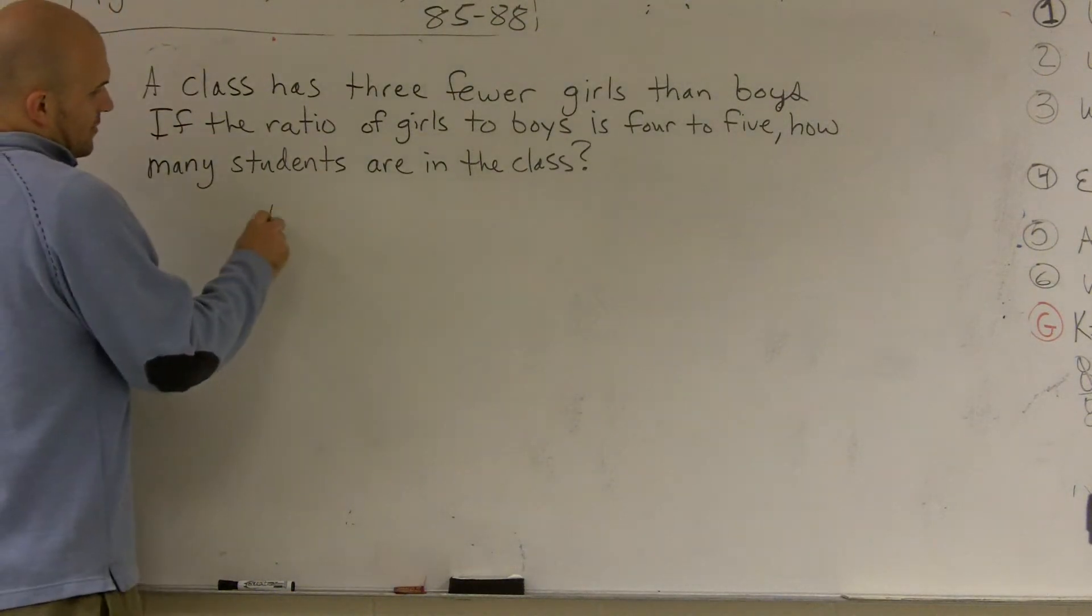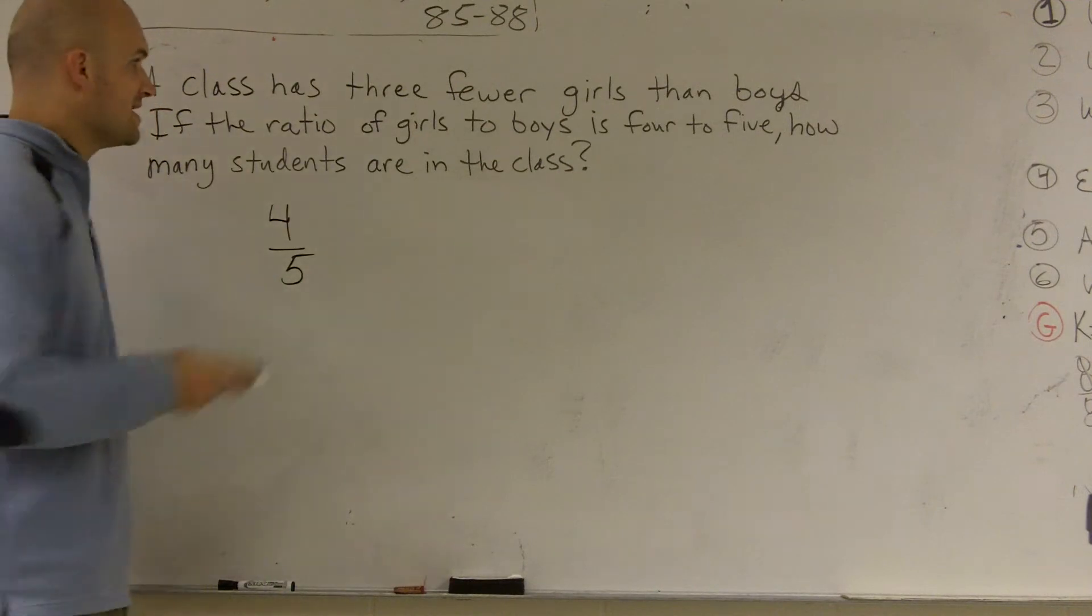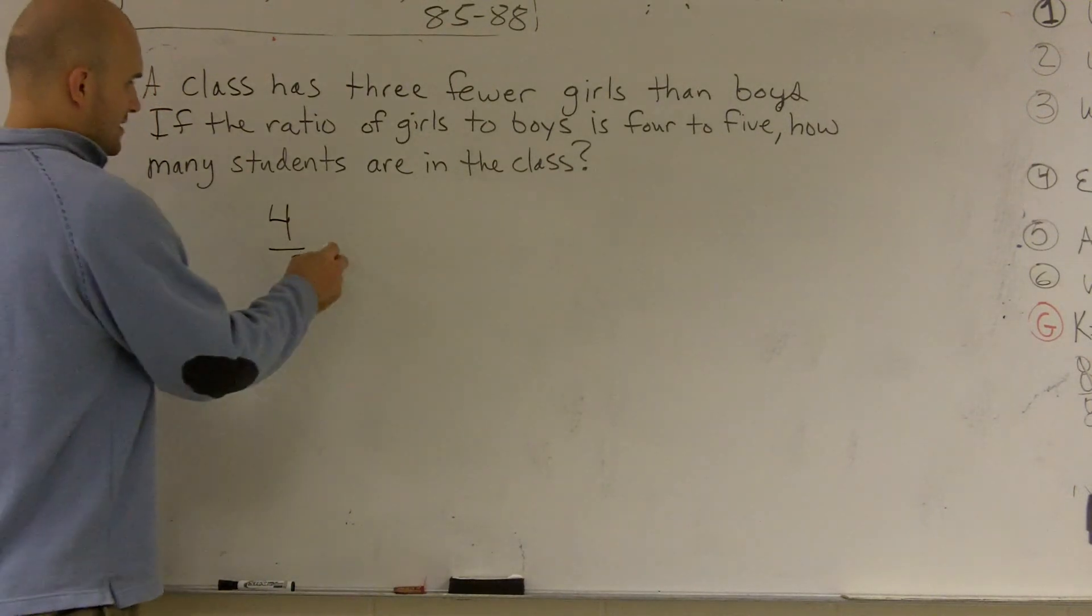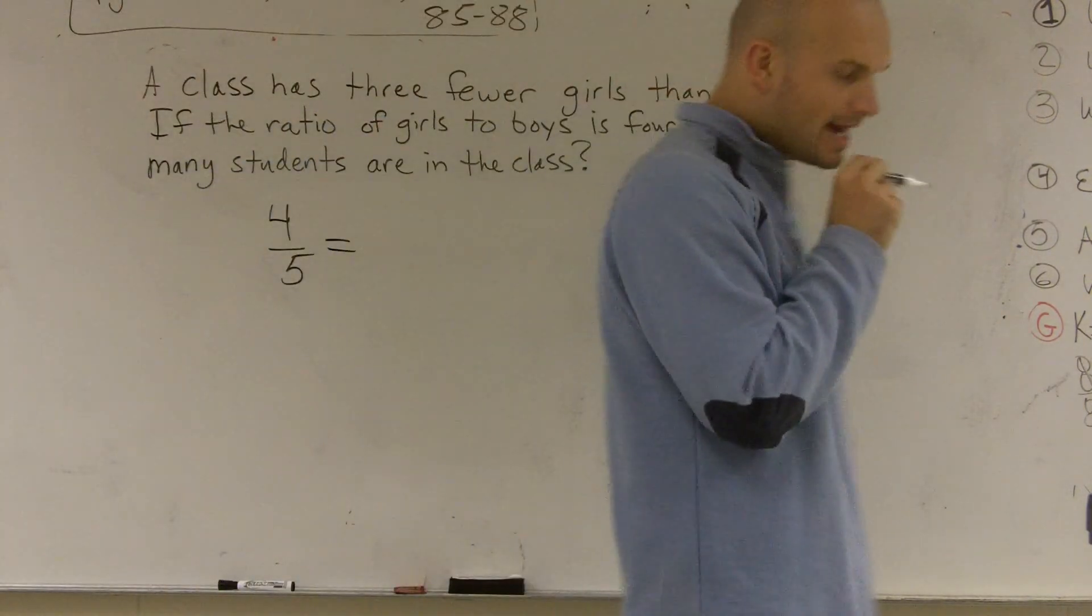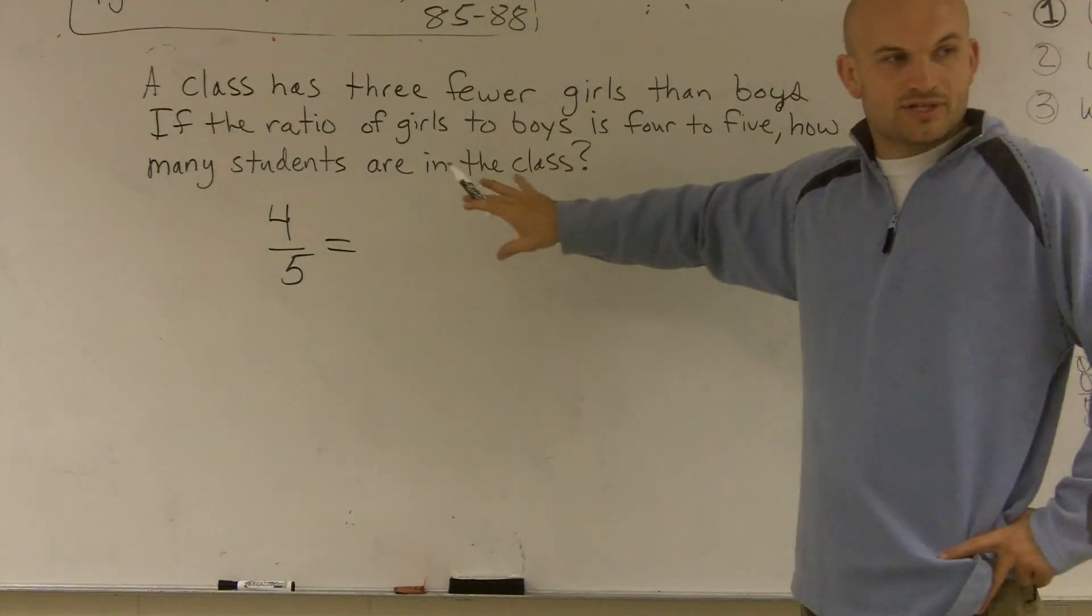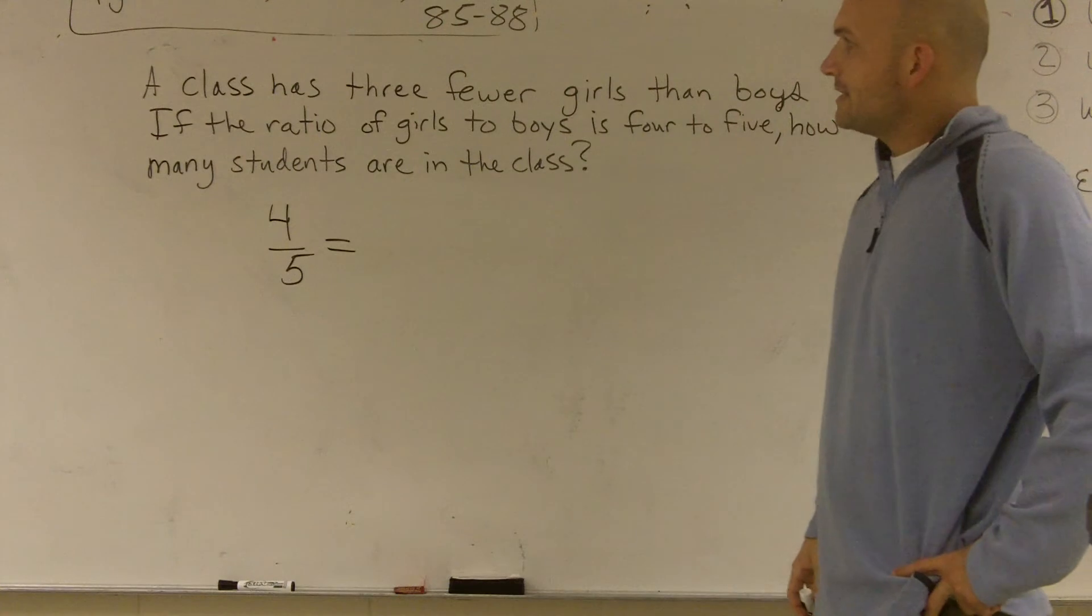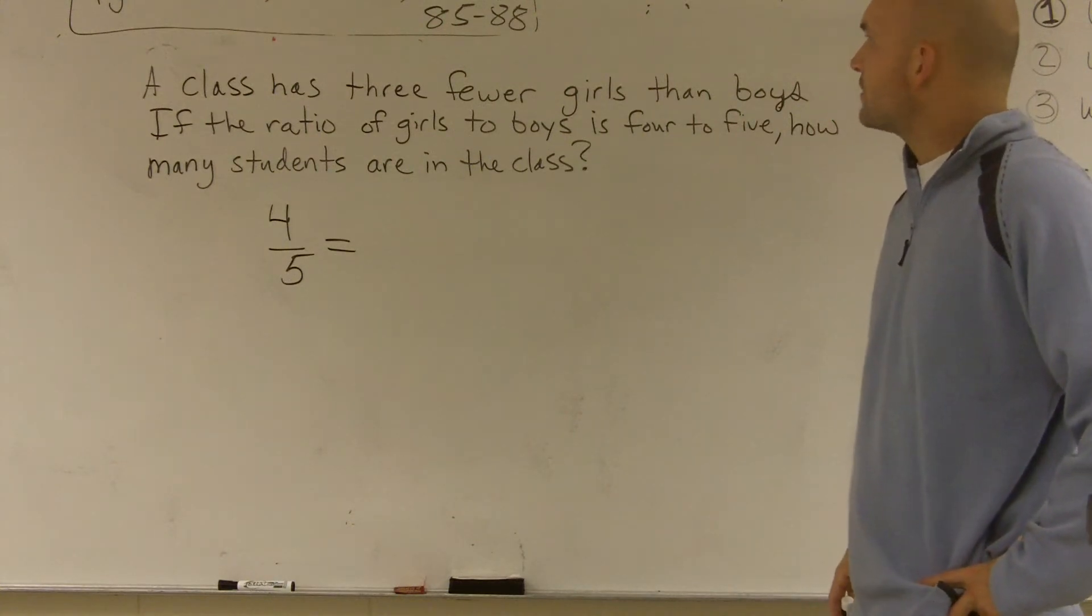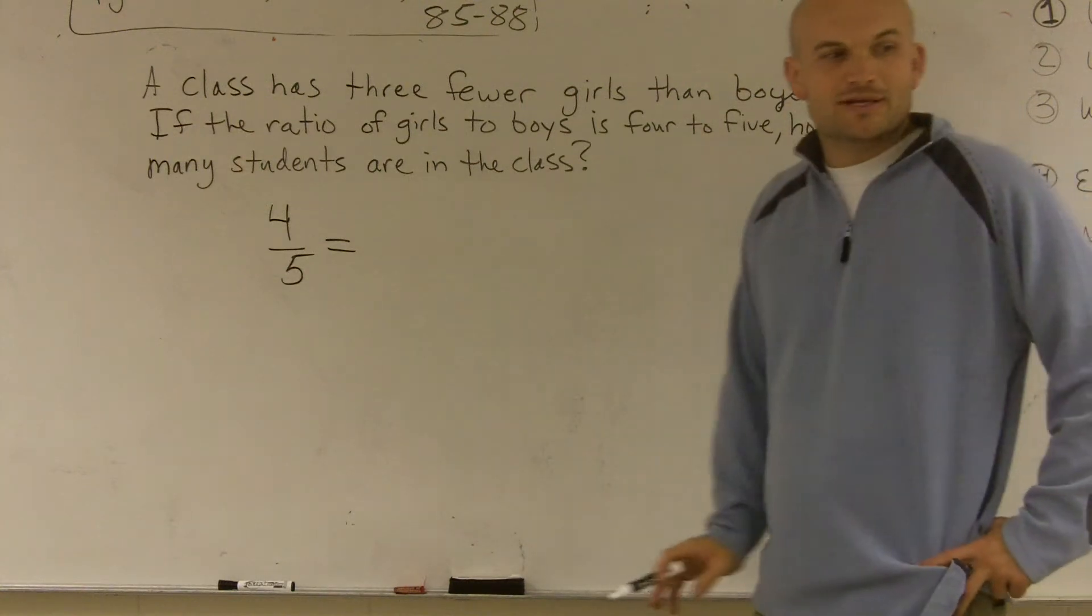So the first thing we know is we have 4 to 5. That's our ratio. And we know it says to find how many we have, right? So we're going to have to solve for something. So we're going to have an equal sign. Now, I need my proportion to equal something. I need to figure out what another ratio is going to be. And let's see, the only thing they talk about is they say class has three fewer girls than boys. That's the only other information I know.